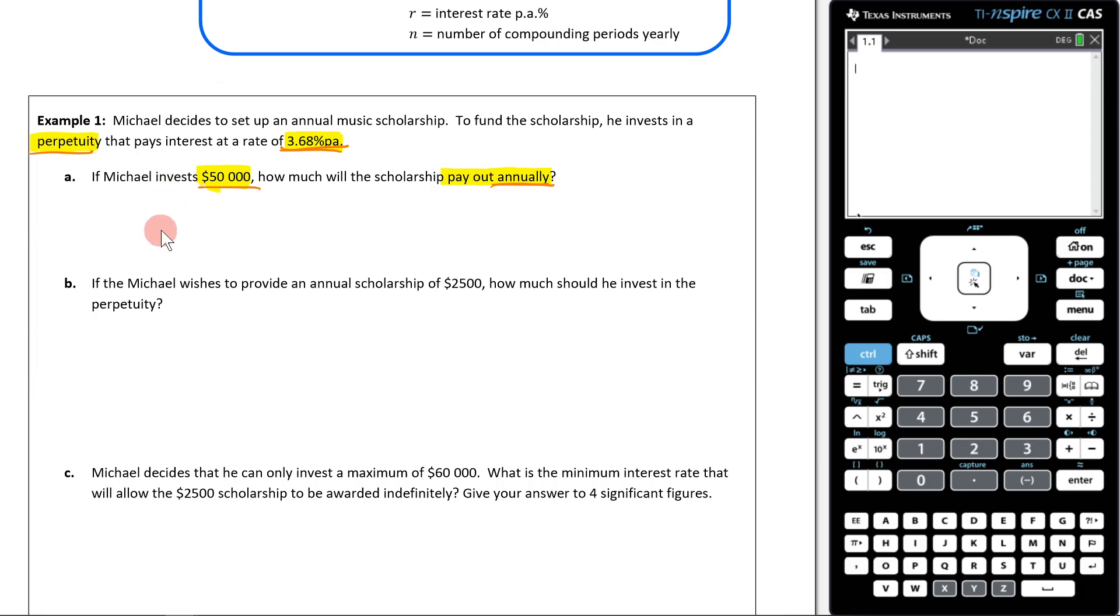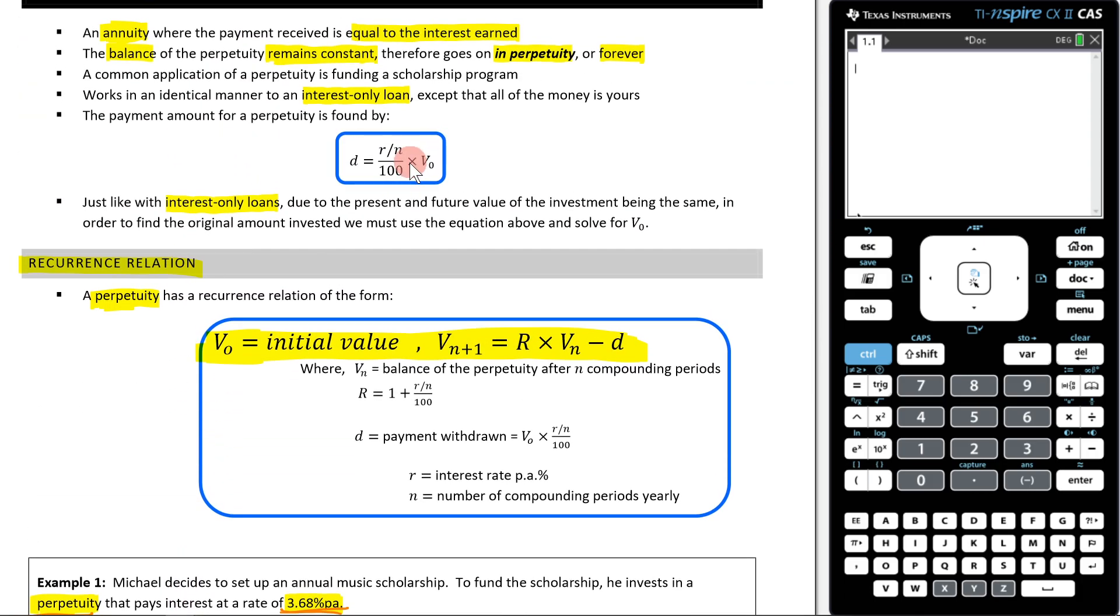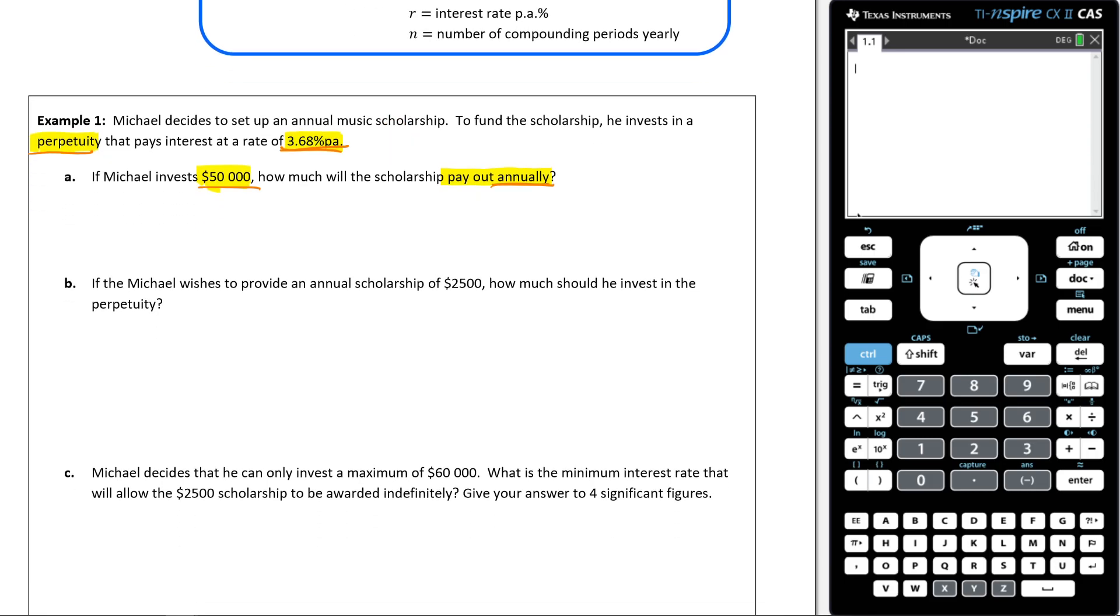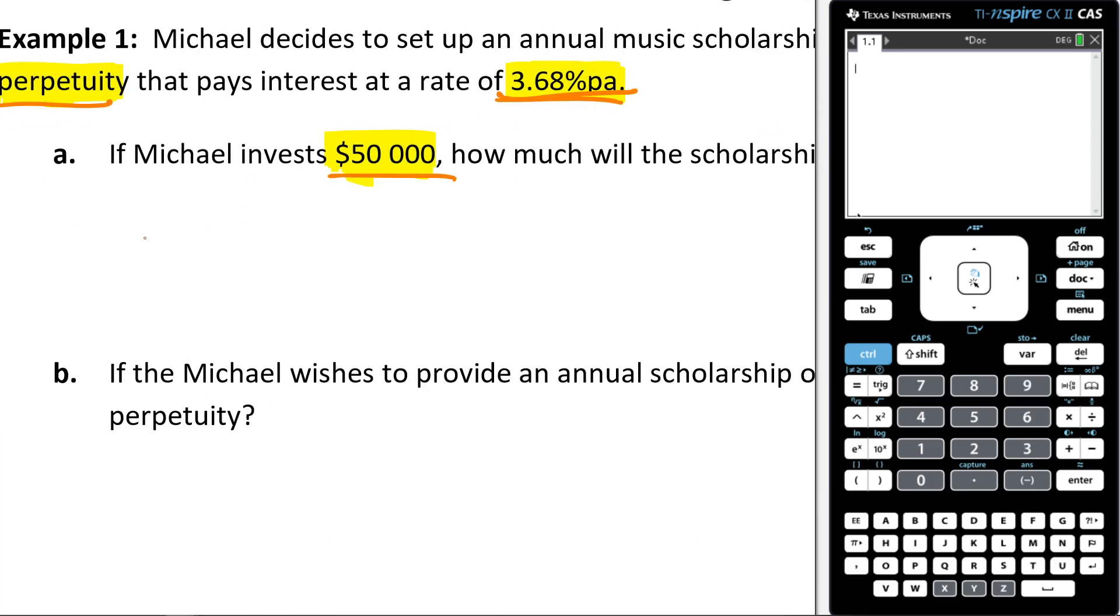We can use our formula here. So remember, we have a formula to figure out how much a perpetuity will pay out. So there it is right here. So let's begin by just writing down this formula. So I'm going to come here and write D is equal to R over N over 100, and then I'm timesing it by V₀.